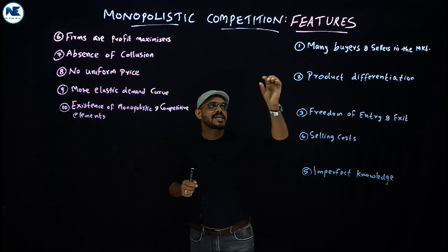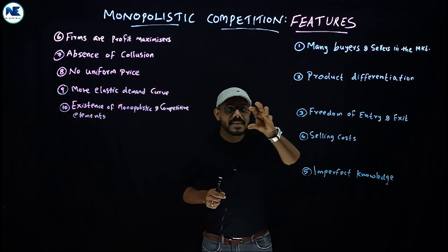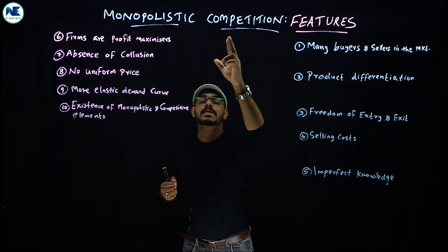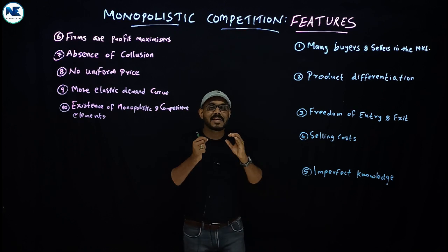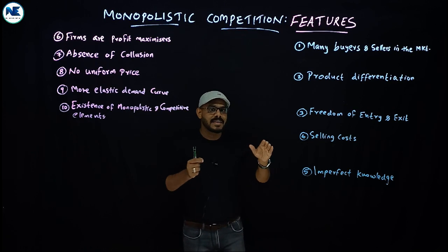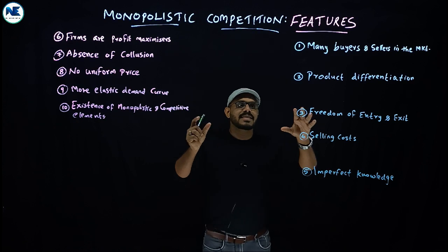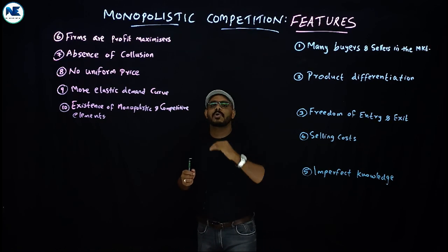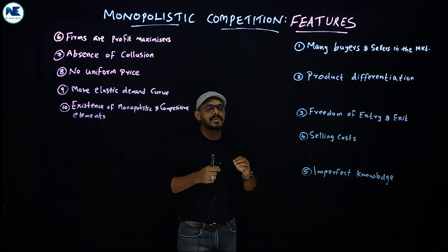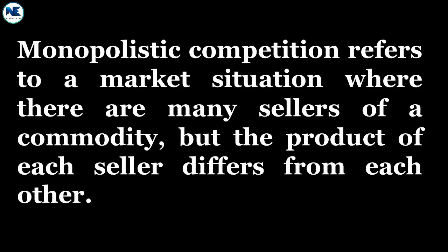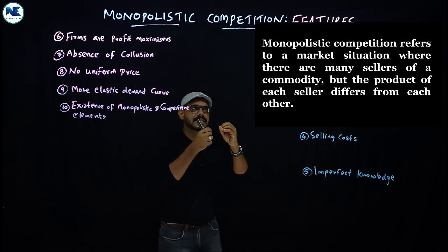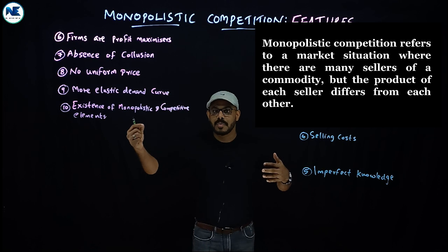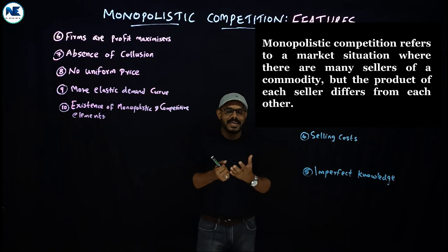Today's topic is the features or characteristics — we can simply say assumptions — of monopolistic competition. This is another very interesting topic under microeconomics. We have 10 points associated with features of monopolistic competition. Monopolistic competition comes under imperfect competition, where we can see differentiated products, a large number of firms, selling costs, and so on.